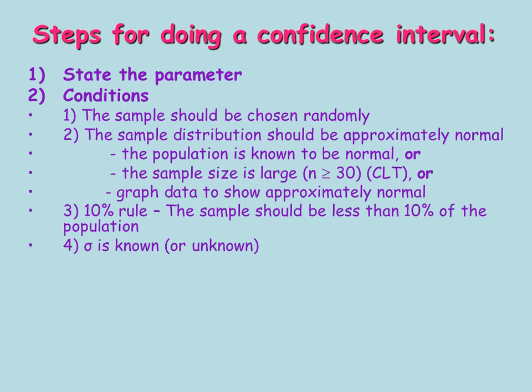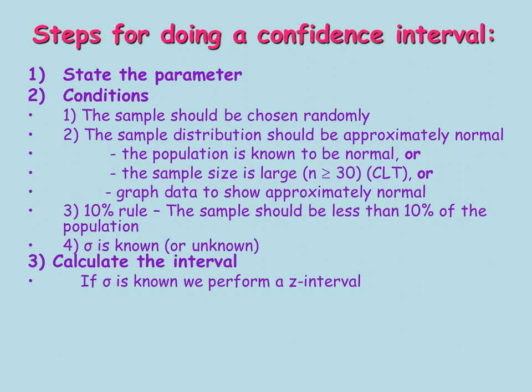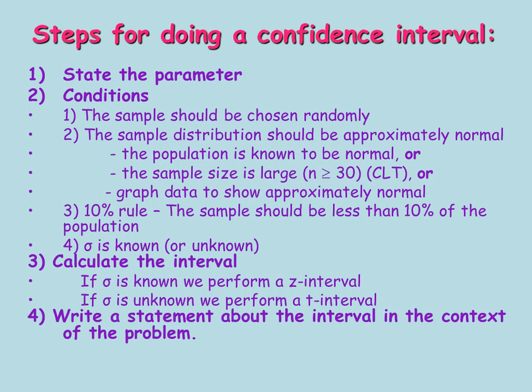Sometimes our standard deviation is known, and sometimes it's not. Depending on whether or not it is or isn't, we're going to do a certain type of confidence interval. Once our conditions are met, we then calculate the interval. If we know what the standard deviation is, we perform a z-interval like we've done previously. If the standard deviation is unknown, we perform a t-interval — and that is what is new to this chapter. Once we calculate our interval, we write a statement about the interval in the context of the problem, similar to what we've done in the past.